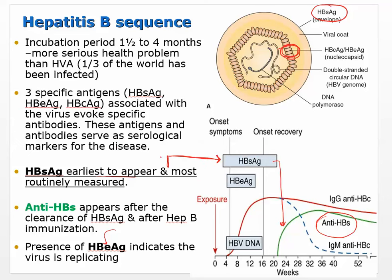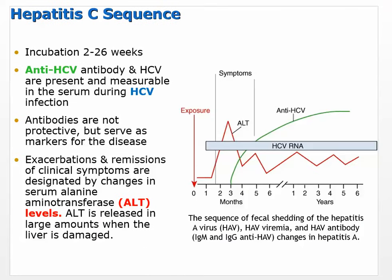These are the different things we would look at — different parts of the virus. The antigens are part of the virus and the antibodies are what we can measure to figure out what's going on. The key understanding is that antigens are parts of the virus and antibodies are what we measure in testing.